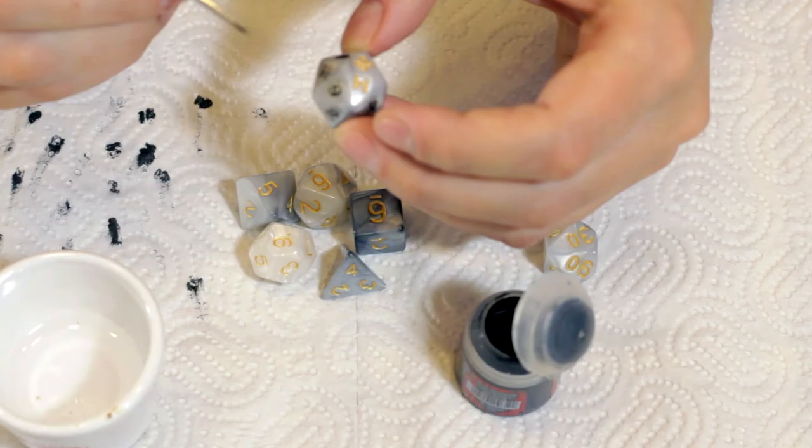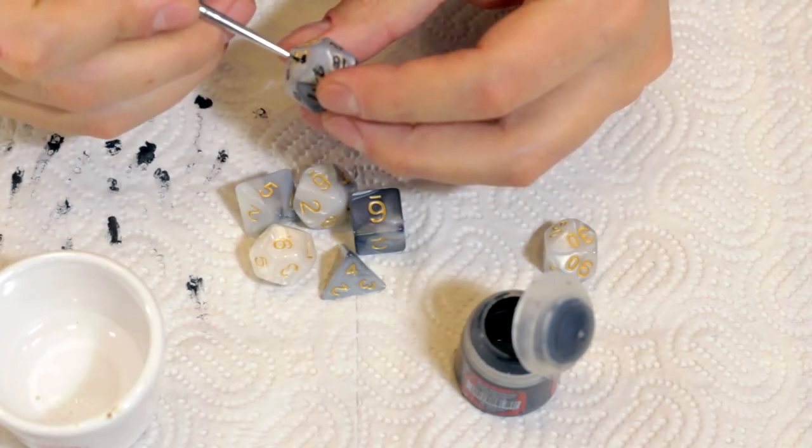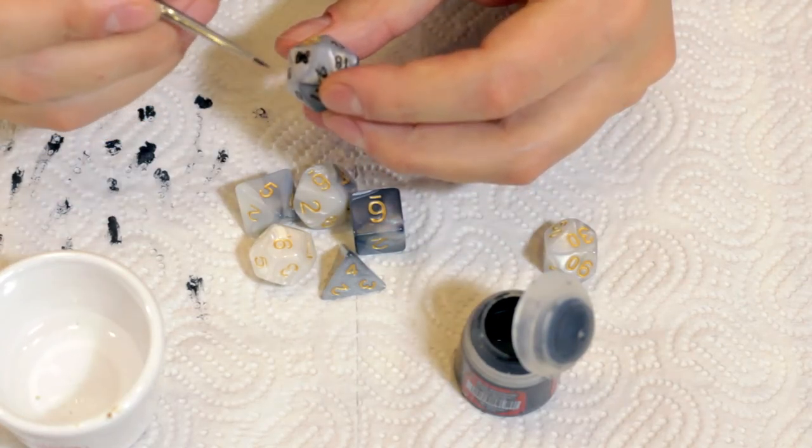Now, I'm thinking to leave the 20 gold. Keep it as it is. I just might repaint it with the gold color that I have.